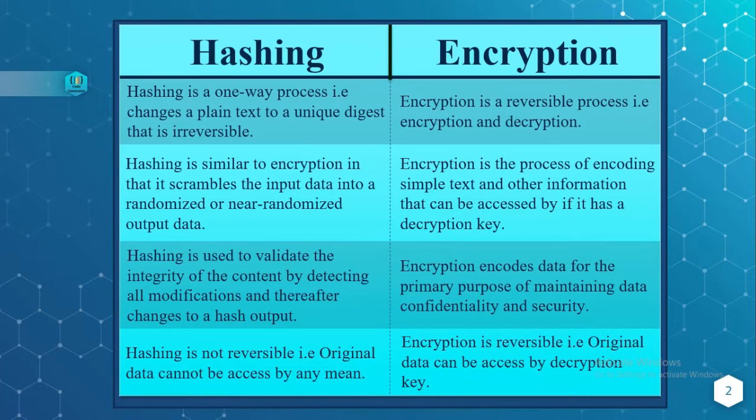Encryption is a process of encoding plain text and other information that can be accessed if you have a decryption key. In hashing, we don't have decryption, whereas in encryption we can decrypt the data. Hashing is used to validate the integrity of content by detecting any modification, which then changes the hash output.